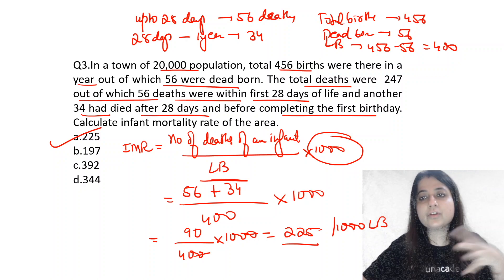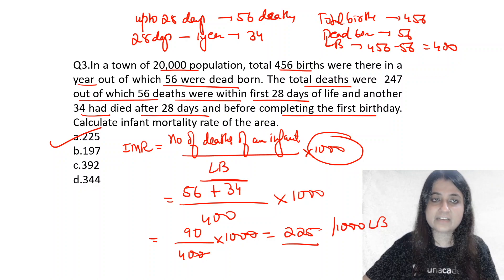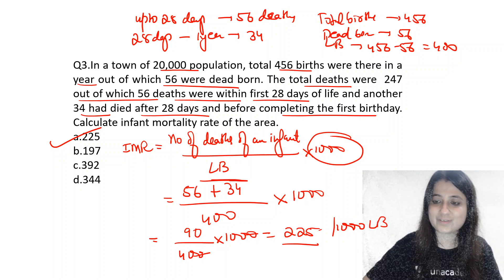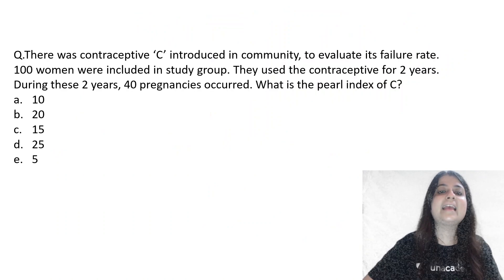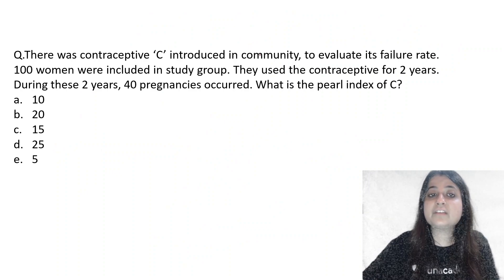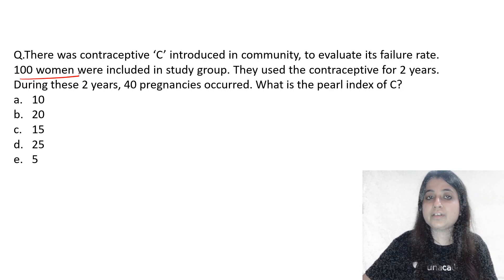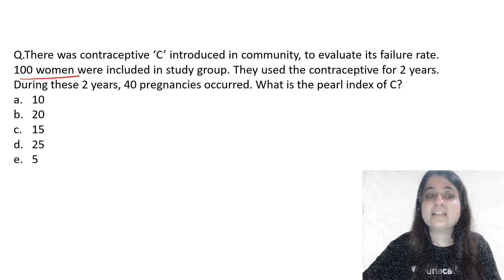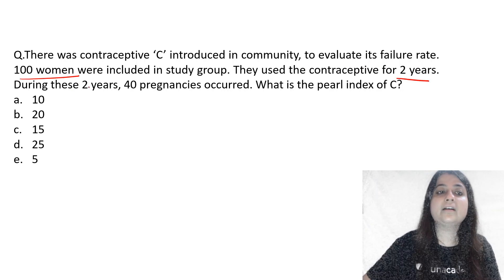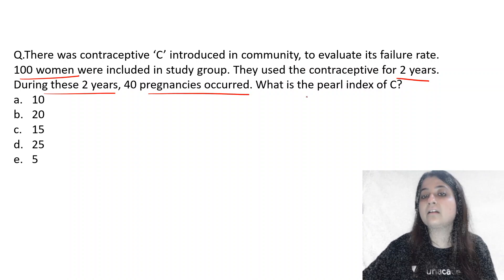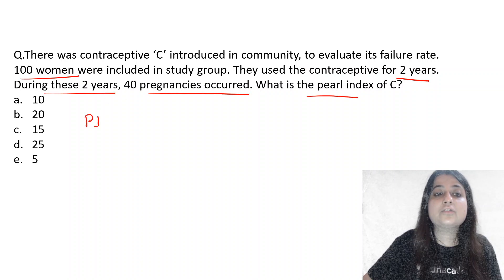We will keep doing numericals for other indicators in subsequent Super 5 MCQ sessions. Next: a contraceptive C was introduced in a community to evaluate its failure rate. 100 women used the contraceptive for 2 years. During these 2 years, 40 pregnancies occurred. What is the Pearl index?